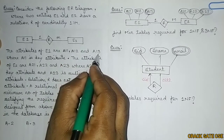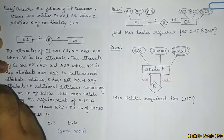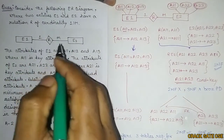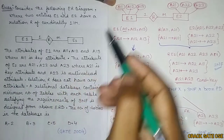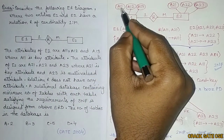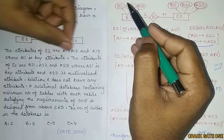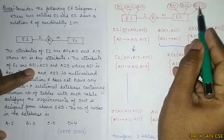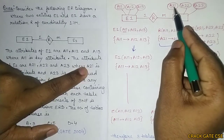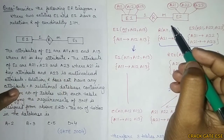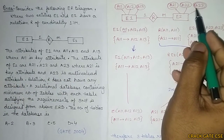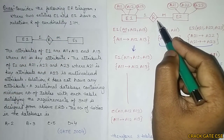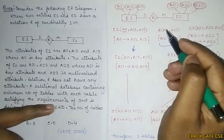The attributes of E1 are A11, A12, and A13 where A11 is the key. The attributes of E2 are A21, A22, and A23, where A21 is the key and A23 is a multi-valued attribute. Relationship R does not have any attribute.